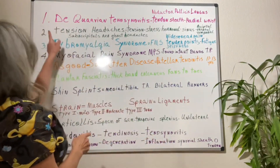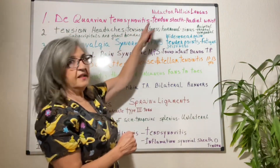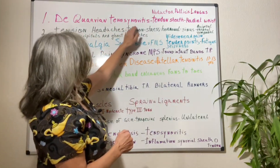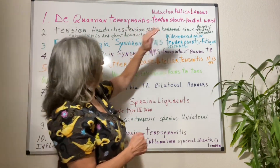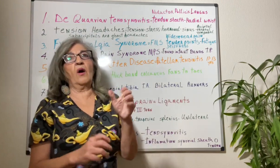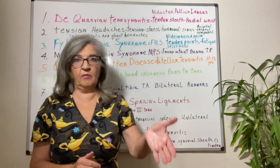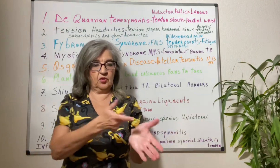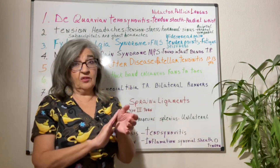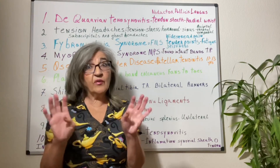Next is De Quervain's tenosynovitis. Remember, anytime you see '-itis' it means inflammation. So the tendon sheath — a thin layer around the tendon — is swollen and it causes pain. This happens on the radial side; in anatomical position, that's where your thumbs are, right at the carpal metacarpal joint. This is actually what's wrong with my hands after working for 32 years and overusing my thumbs. It happens with repetitive motion and injuries.